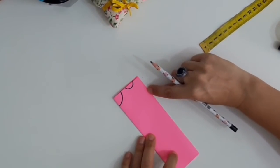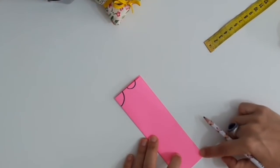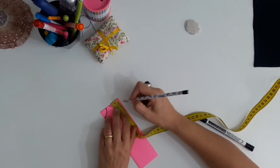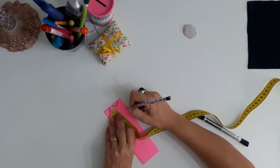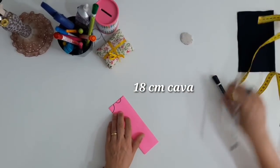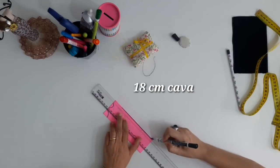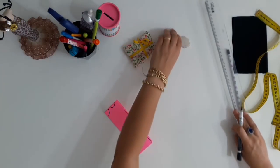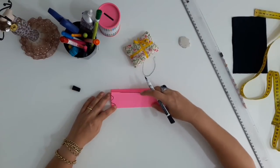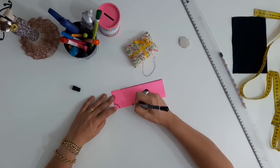I'm going to mark now, for my armhole, I'm going to leave 18 cm. So, I'm going to mark 18 cm. And here, then, is where I'm going to unify with the seam. I'm going to show you how it will look.